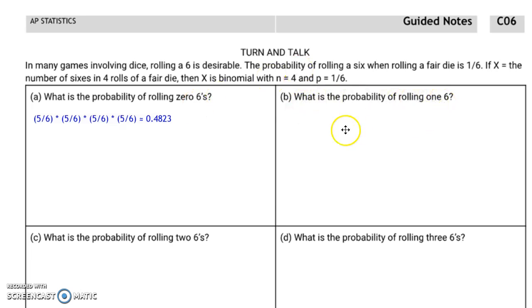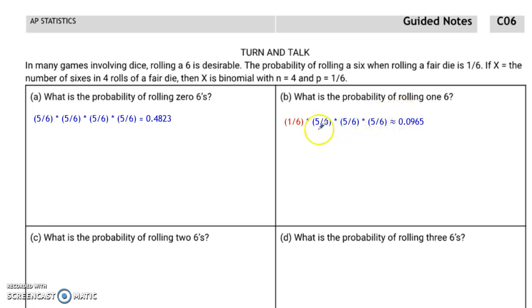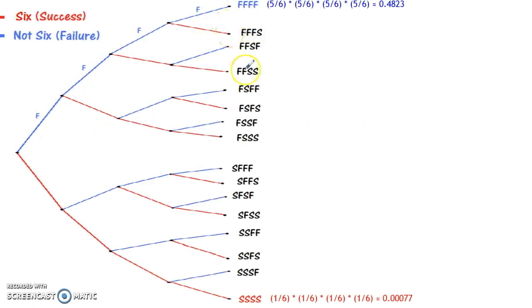The probability of rolling one 6 is a little more complicated. You might think that all we have to do is multiply the probability of rolling one 6, which is 1/6, times the probability of rolling something other than a 6 three times. However, if you thought that was the correct answer, you'd be wrong — because this is the probability of rolling one 6 if the first roll is the 6 and the other three rolls are not 6s. Let's look back at the tree diagram to better understand.